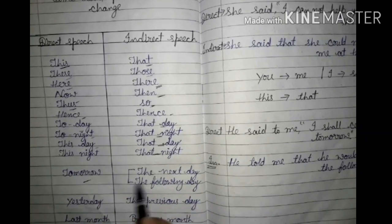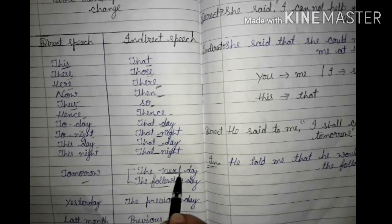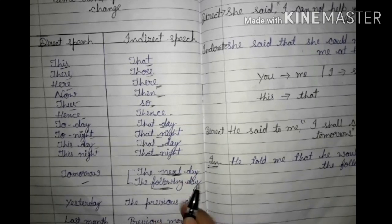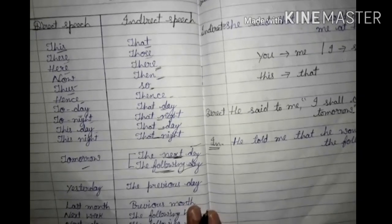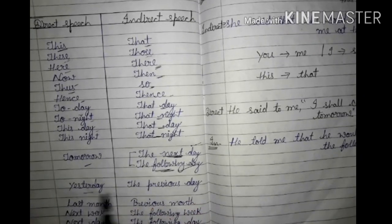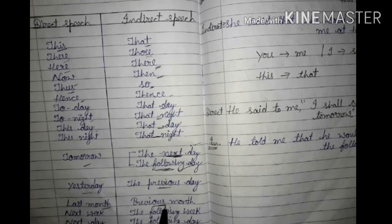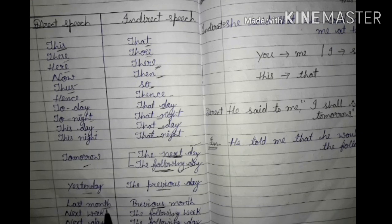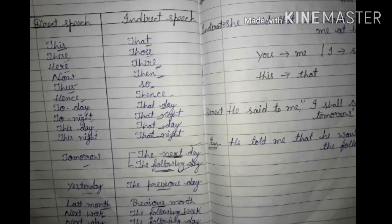'Tomorrow' will change into 'the next day' or 'the following day'. You can use 'the next day' or 'the following day' — do not use 'on the next day'. 'Yesterday' will change into 'the previous day'. 'Last month' changes into 'the previous month'. 'Last week' changes into 'the previous week'.